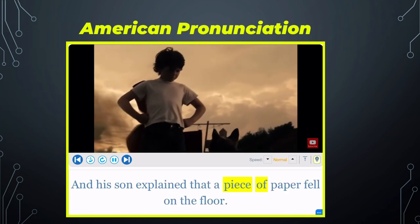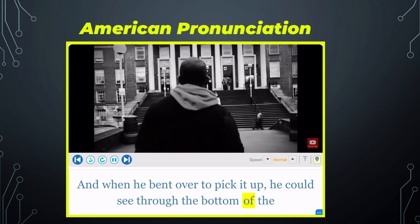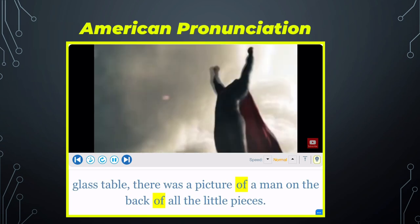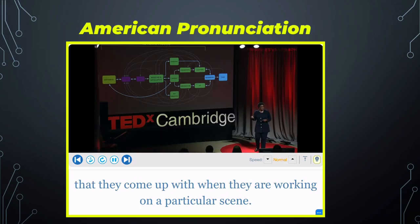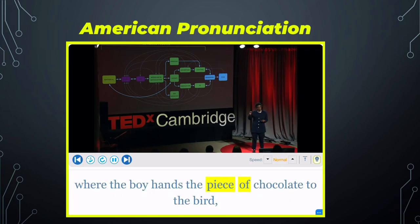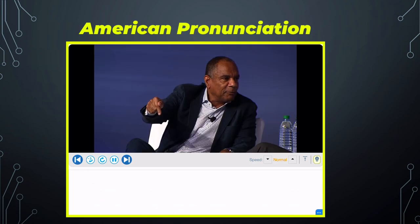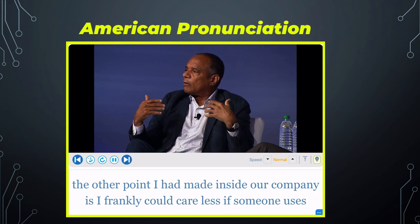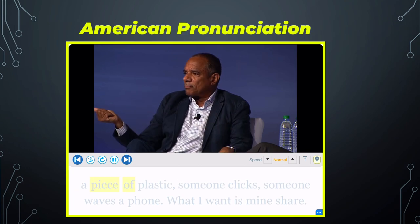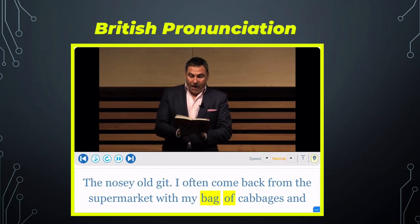His son explained that a piece of paper fell on the floor, and when he bent over to pick it up, he could see through the bottom of the glass table that there was a picture of a man on the back of all the little pieces. So if you think about that scene in 'Up' where the boy hands the piece of chocolate to the bird — that 10 seconds took one animator almost six months to perfect. I frankly could care less if someone uses a piece of plastic, someone clicks, someone waves a phone.